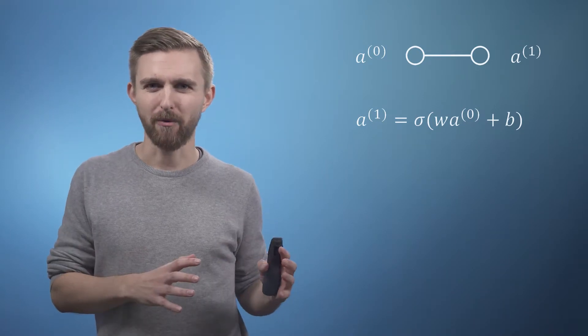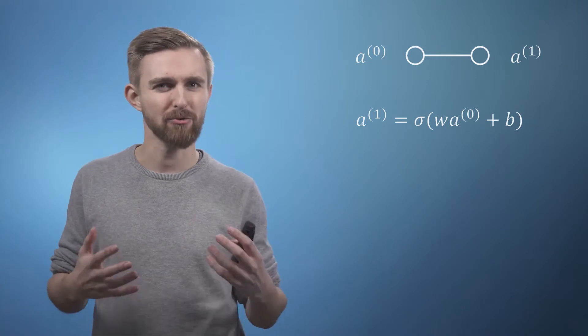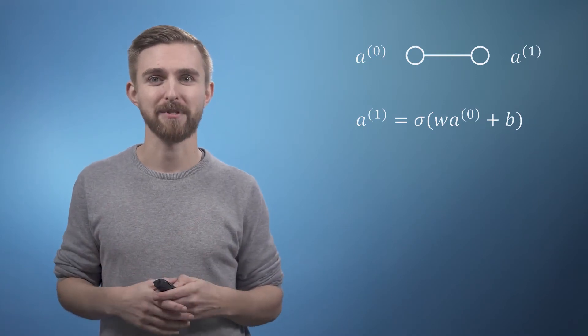Well the short answer is more neurons. So now we're just going to start building up some more complexity whilst keeping track of how the notation adapts to cope. If we now add an additional neuron to our input layer, we can still call the scalar output variable a1, but we will need to be able to tell the difference between the two inputs. So we can call them a00 and a01.